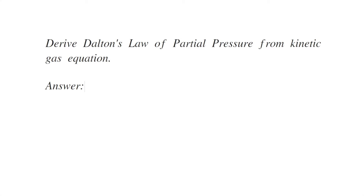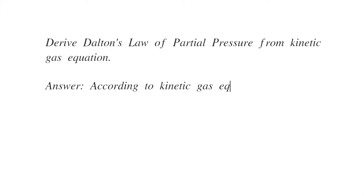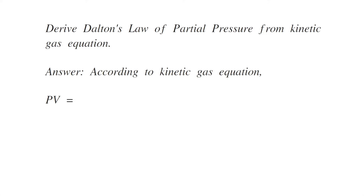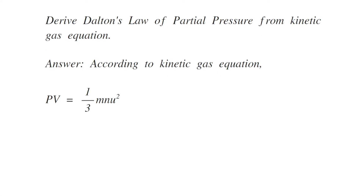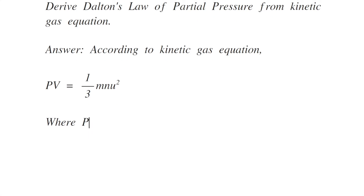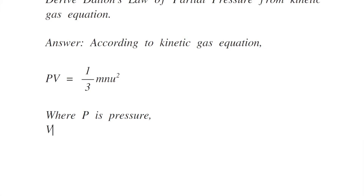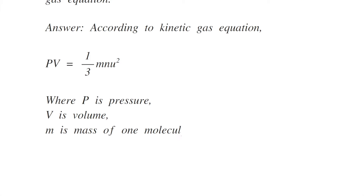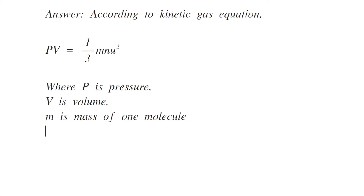Derive Dalton's law of partial pressure from the kinetic gas equation. According to the kinetic gas equation, PV is equal to 1/3 mNu squared, where P is the pressure, V is the volume, M is the mass of one molecule, N is the total number of molecules, and u is the RMS velocity.